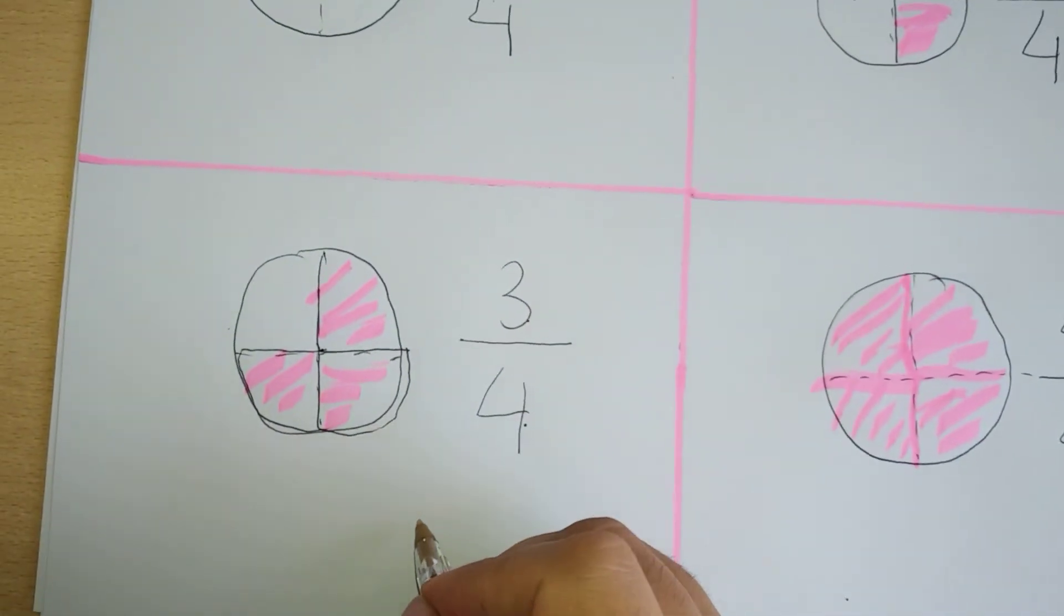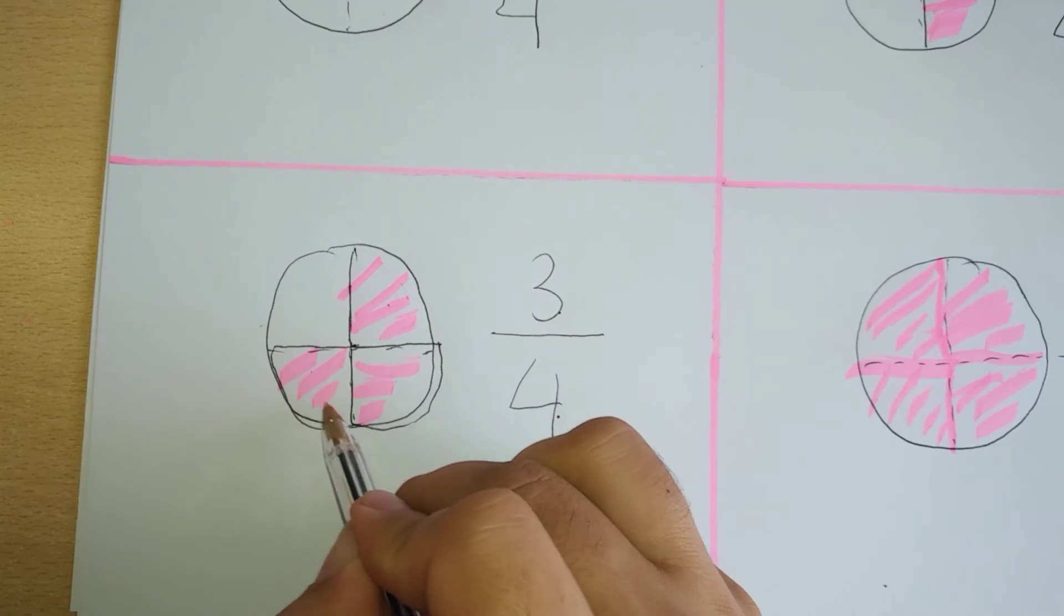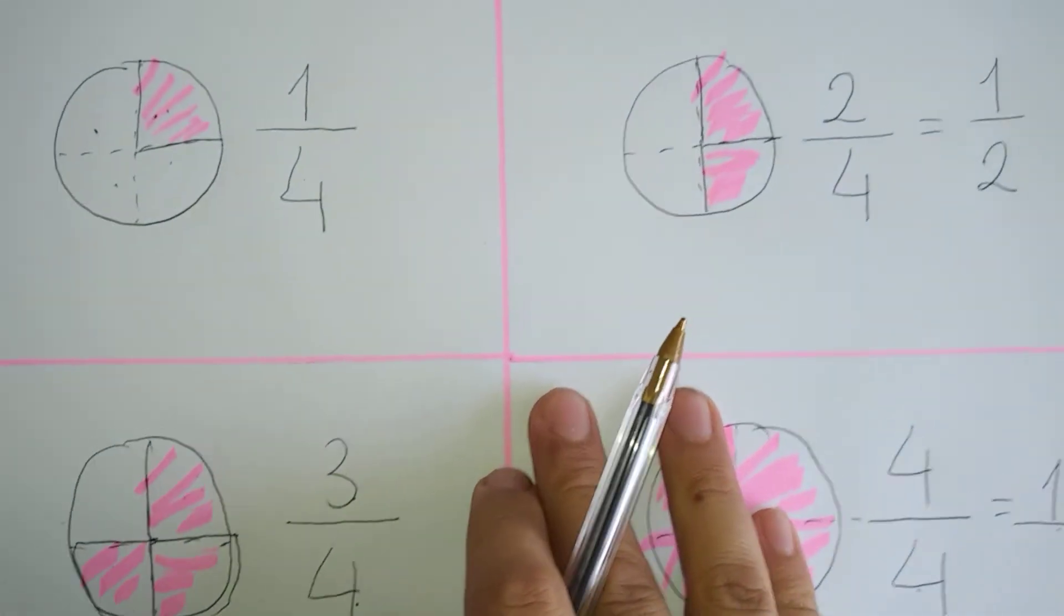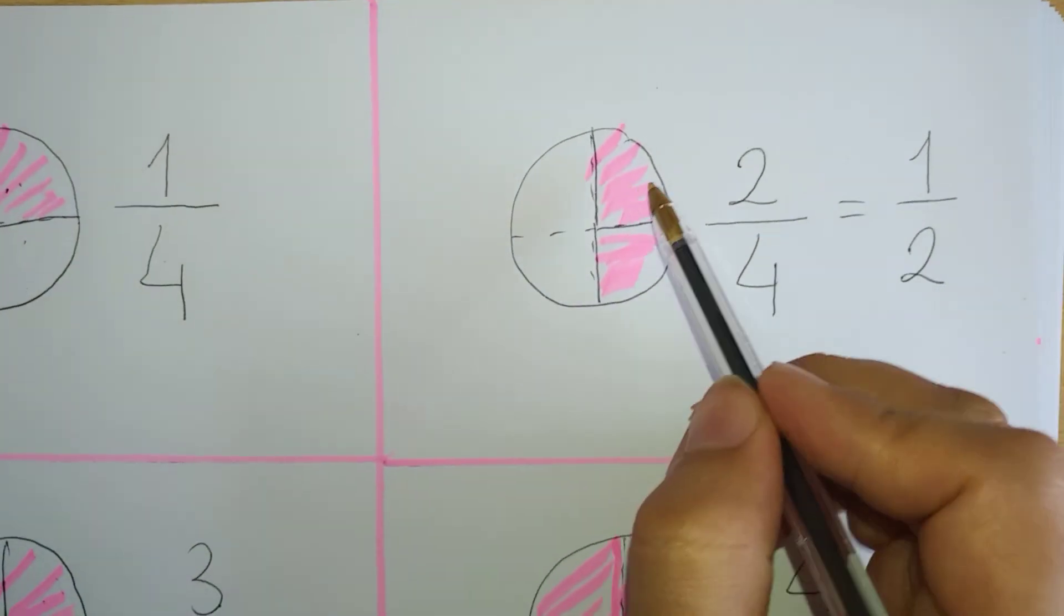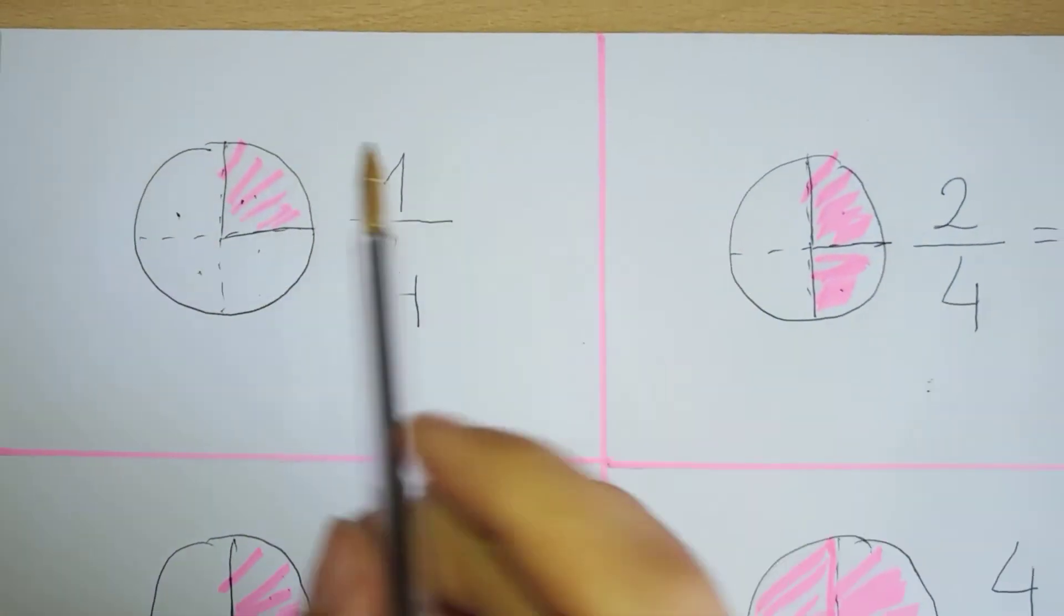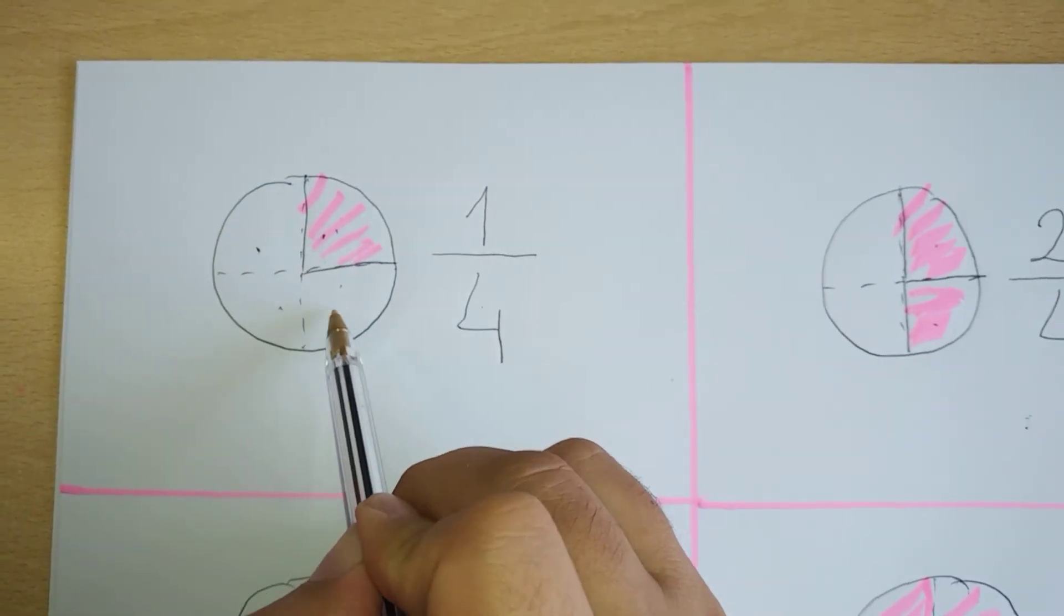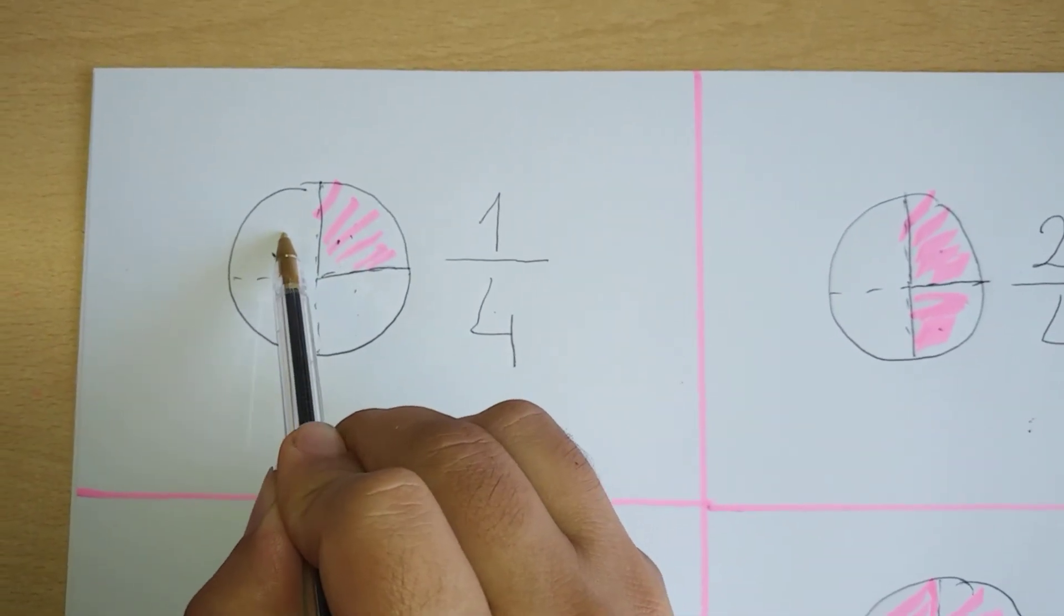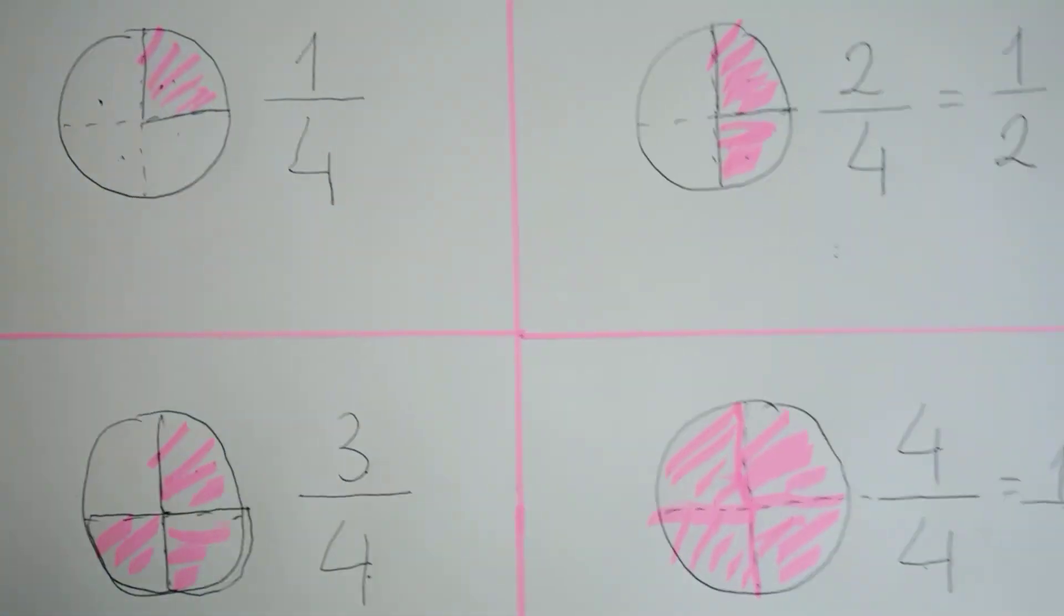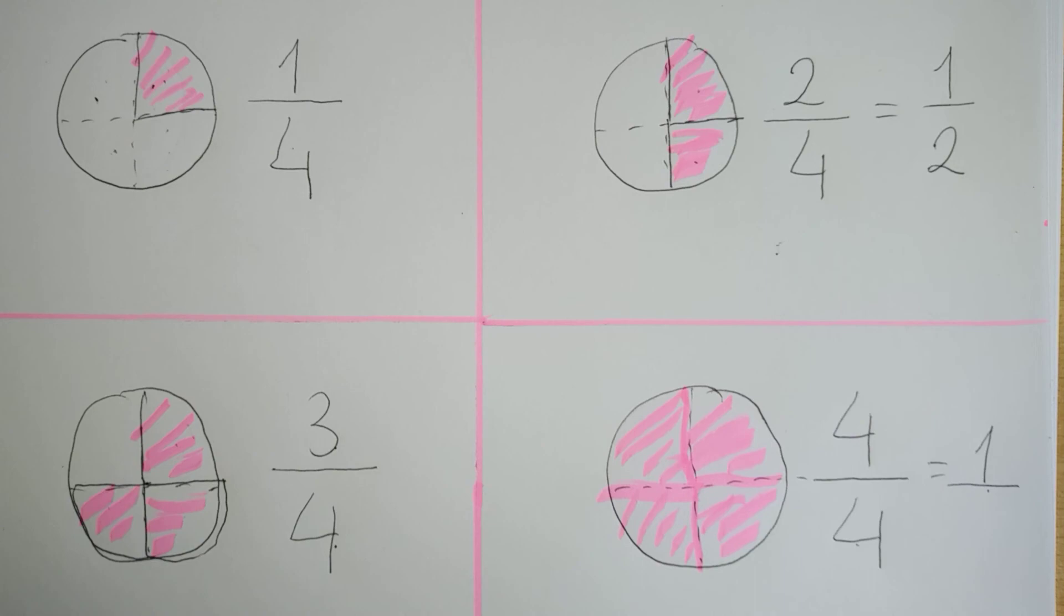A three quarters of the pizza equals three pieces of four pieces. And half of the pizza means one, two, out of four. And one quarter, only one piece out of one, two, three, four pieces. Thank you for fractions. Thank you.